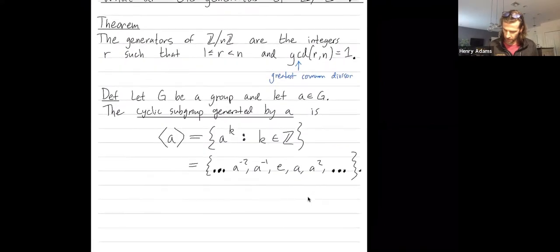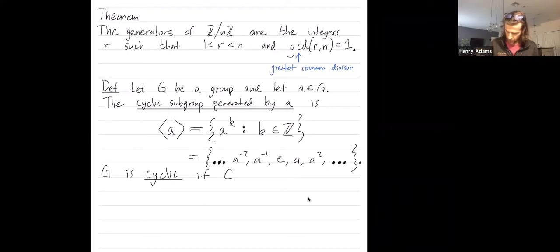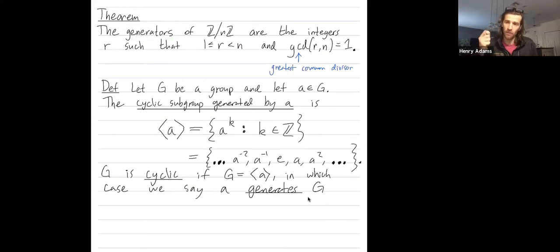So a group is cyclic if it's equal to one of its cyclic subgroups, if there's an element A that generates the entire group. And in this case, we say that A generates the group G. So this is what it means for an element to be a generator of a group. If you can take a single element and combine it with itself, and combine its inverse with the inverse, and produce every single element in the group, then that's what it means for that element A to generate the cyclic group G.